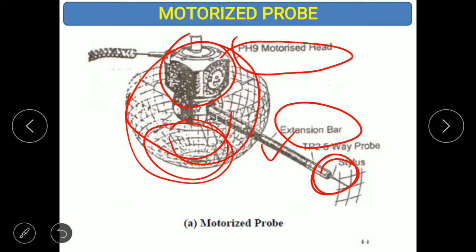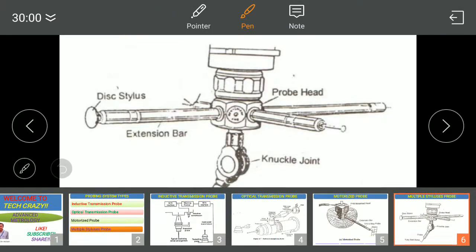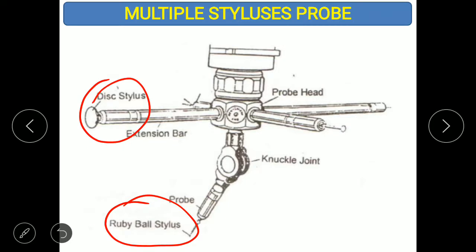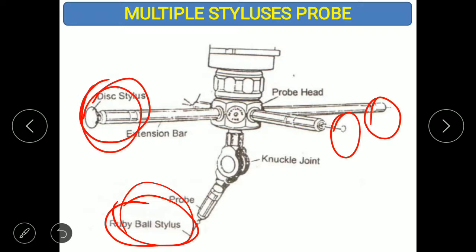The multiple stylus probe has different stylus types — for example, a ruby ball stylus and a disk stylus. The advantage is that in some cases if you need a disk-type stylus for measurements, and you only have a ball-type stylus, replacing it would be time consuming.